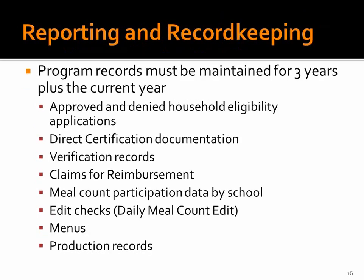As a participant in the federal child nutrition programs, you are required to maintain records for three years plus the current year — four years total. The current year began this October 1st. The specific program records to keep include household eligibility applications, direct certification documentation, verification records, claims for reimbursement, meal count information, daily meal count edit forms or edit checks, menus, and production records.